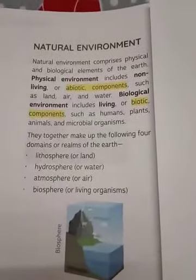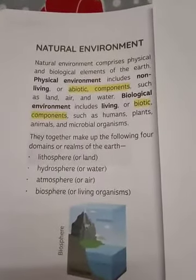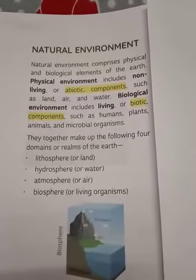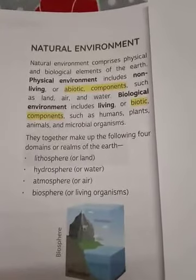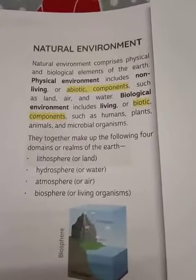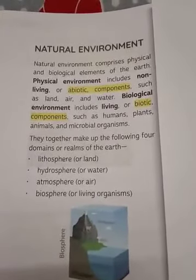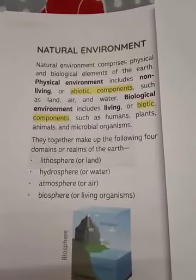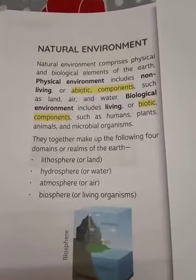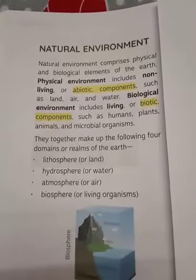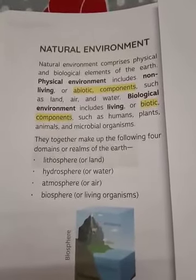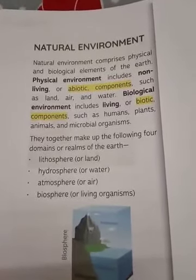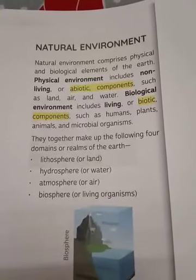Next is natural environment. What does it comprise of? It contains physical and biological elements of the earth. In the physical component, it includes non-living things or abiotic components like land, air, and water. The biological environment includes living things — biotic components like humans, plants, animals, and microbiological organisms. So, natural environment comprises of physical and biological elements.